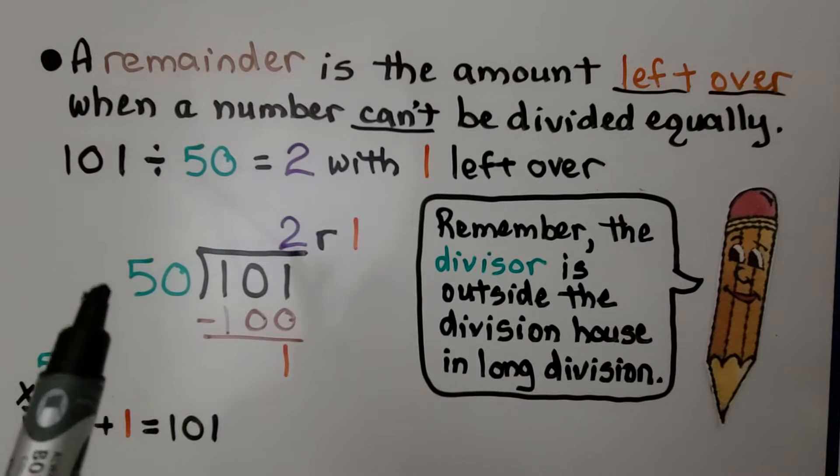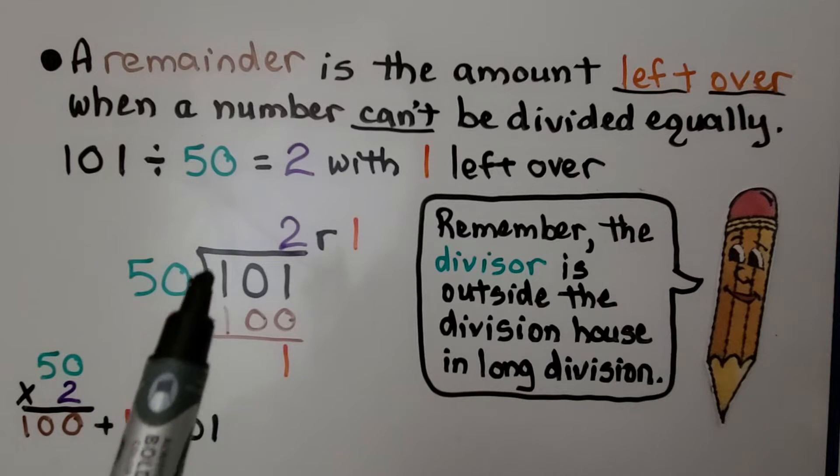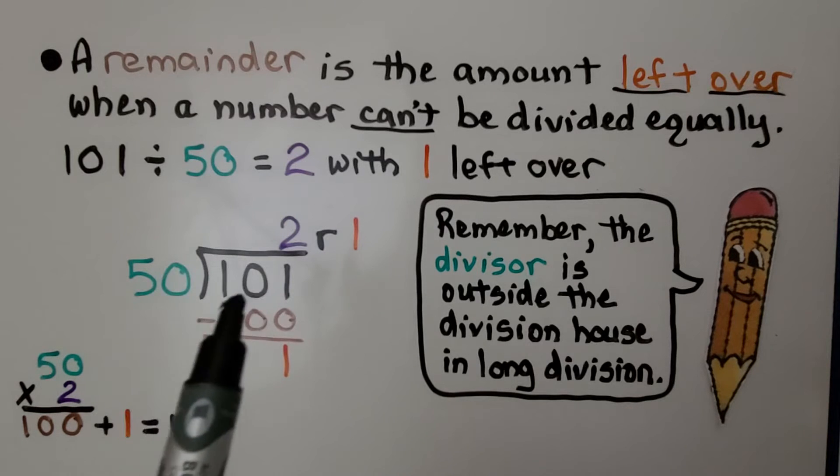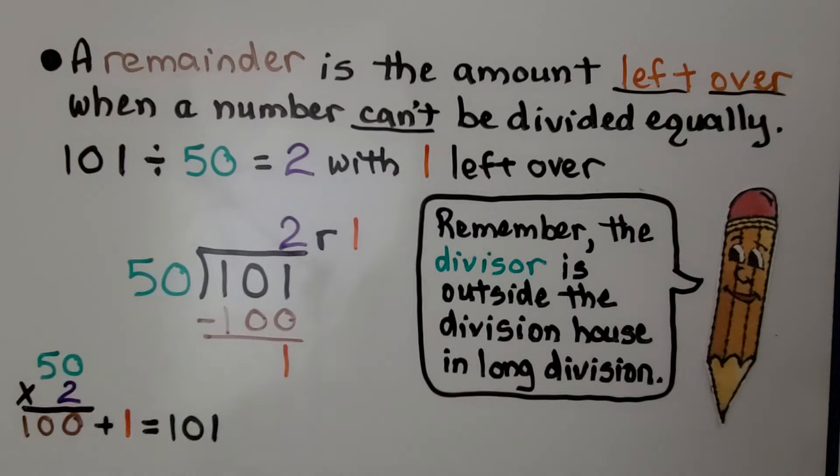Remember, the divisor is outside the division house in long division. If we say that this symbol is the division house, the divisor is on the outside, and we have the quotient up on the roof.